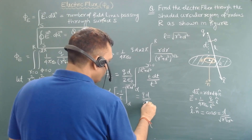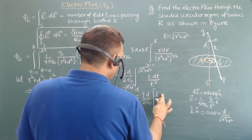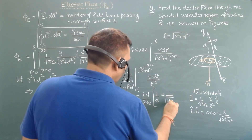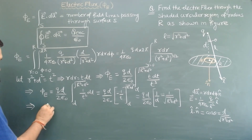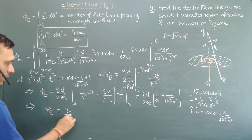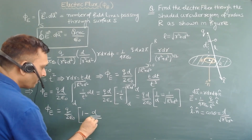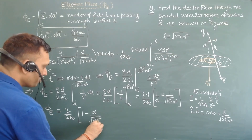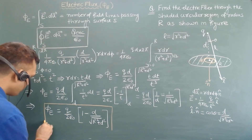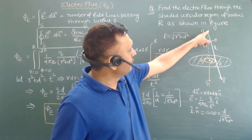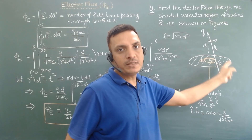So the flux is (qd)/(2ε₀) × [1/d − 1/√(R² + d²)], which simplifies to φ_E = q/(2ε₀) × [1 − d/√(R² + d²)]. This is the flux through the shaded circular region.